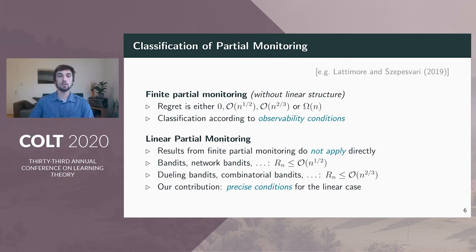On the other hand, getting back to the examples, we know that many bandit models have square root regret and other models like dueling bandits can have n to the two-thirds. So what we're going to see next are precise conditions for the achievable regret in the linear case.